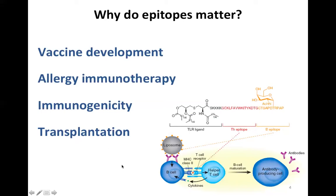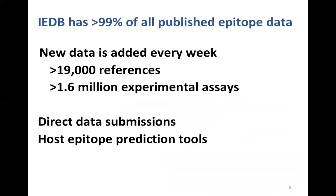Epitopes matter quite a bit, so the NIH created a database for this data. The IEDB was created as a contract intended to exist forever, like PubMed or PDB. It currently has more than 99% of all published epitope data from the literature, and we add new data every week — currently more than 19,000 references amounting to more than 1.6 million experimental assays, primarily from the literature. We also accept direct submissions from authors with large unpublished datasets, and we host epitope prediction tools.